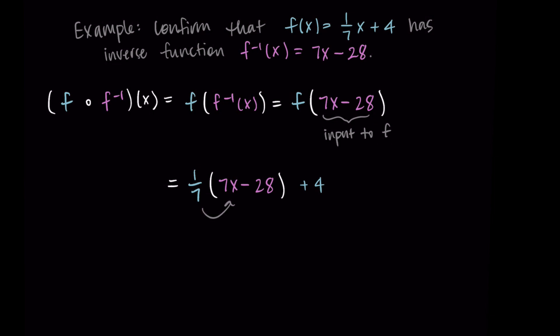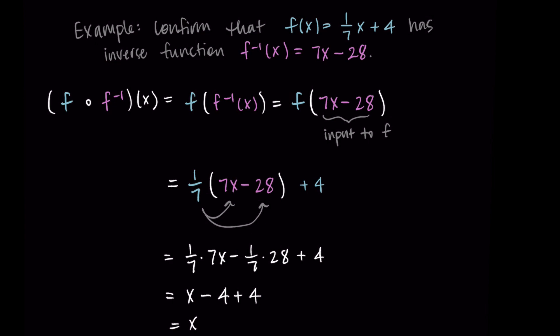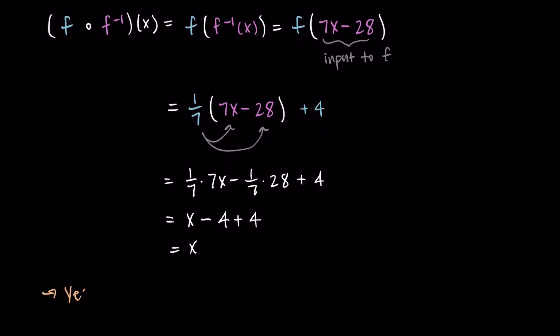We want to simplify this to see if we get x as our solution. Distributing the one-seventh: one-seventh times 7x minus one-seventh times 28, plus 4. The one-seventh and the 7 become 1, and one-seventh times 28 is 4. So I have x minus 4 plus 4, which is just x. Because we were able to do the composition both ways and get x as the simplified solution, these two functions are inverses of each other. So 7x minus 28 is the inverse of one-seventh x plus 4, confirmed by checking the composition in both directions.